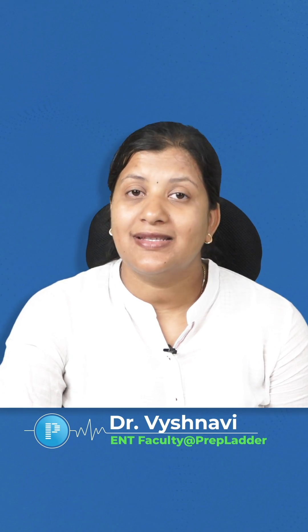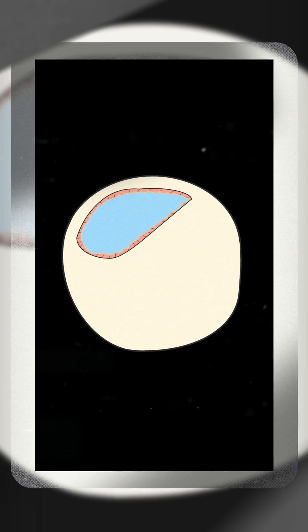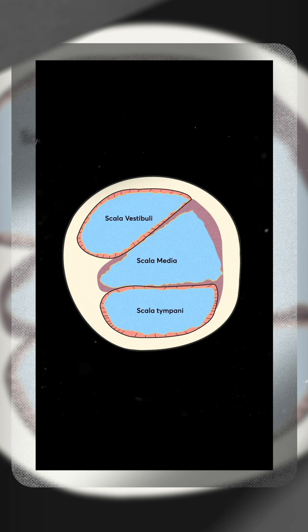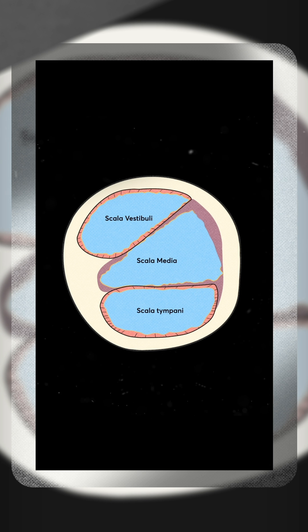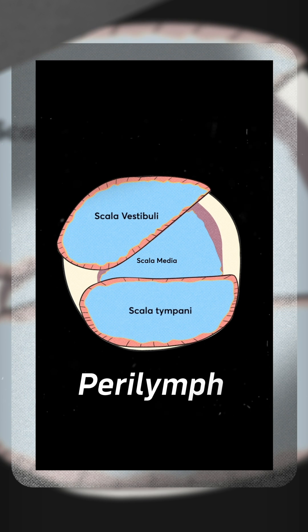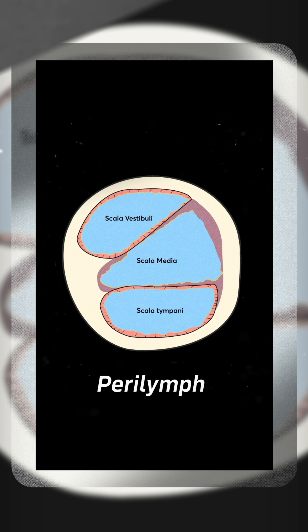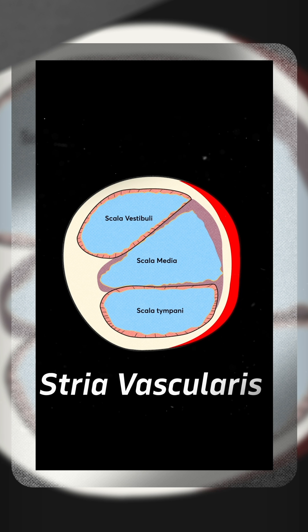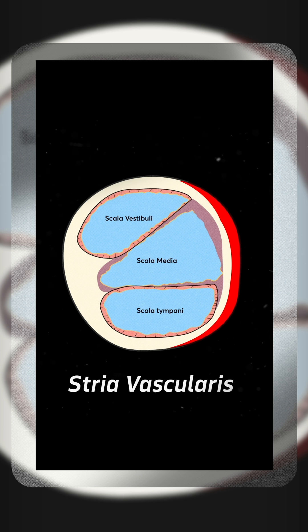When we look at the inner ear, there are three compartments: scala vestibuli above, scala media in the middle, and scala tympani below. The scala vestibuli and scala tympani contain perilymph, whereas scala media has endolymph, which is produced and reabsorbed by the stria vascularis.